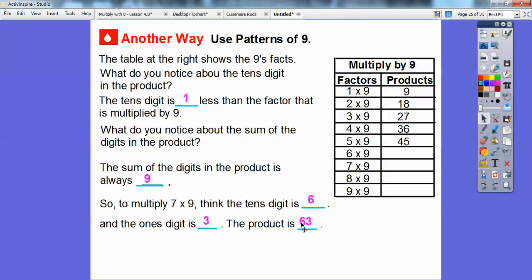Because look, this is one less than this, and six plus three equals nine. So it has to be 63 right there. And then lastly, let's complete the table here.